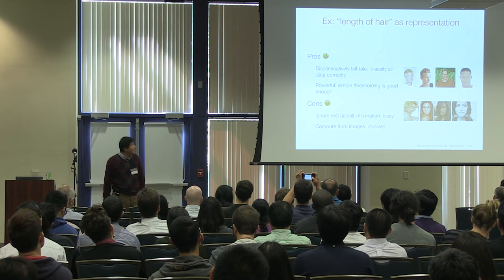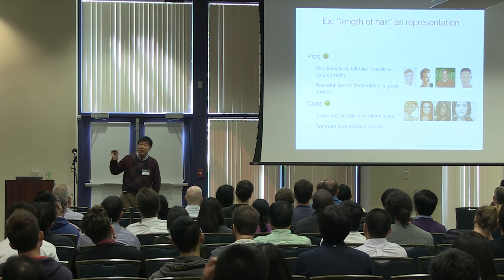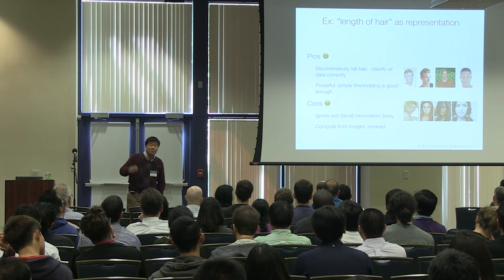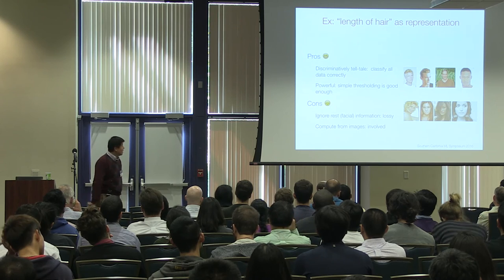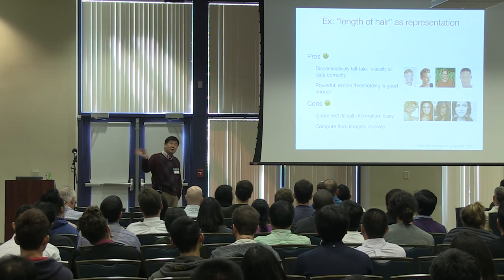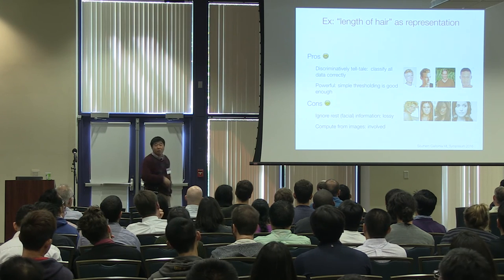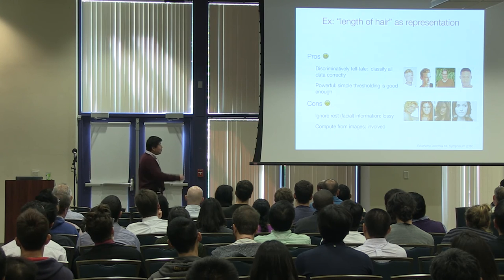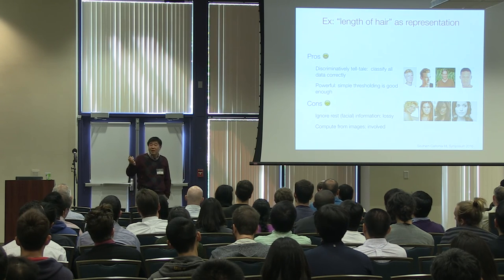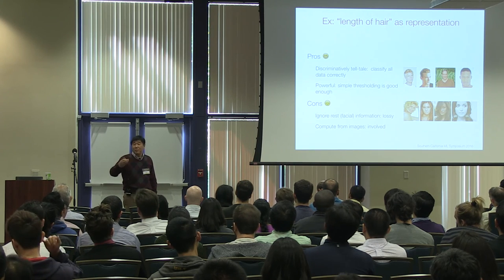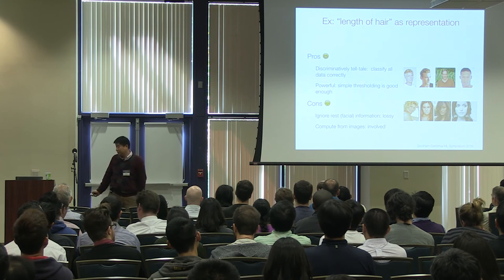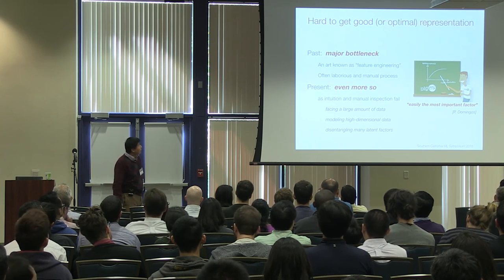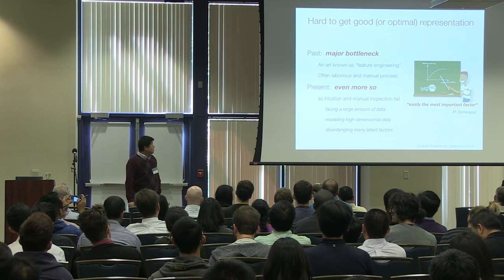For example, just for the sake of argument, suppose we use the length of hair as a feature. The good thing is that, at least for this training data, we can classify every example perfectly — it's super easy. The problem is you lose a lot of information: facial expressions and facial structure are lost, and you're only measuring hair length. Computing this from images is also involved, and it's not even clear this is easier than recognizing male or female directly.